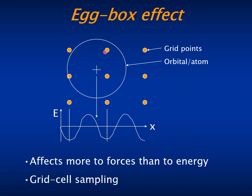That means that the integrals and therefore the total energy will depend somewhat on the position of the basis orbitals relative to the grid points. This is called the egg box effect because it creates a fictitious potential with the shape of an egg box depending on the position of the atoms.